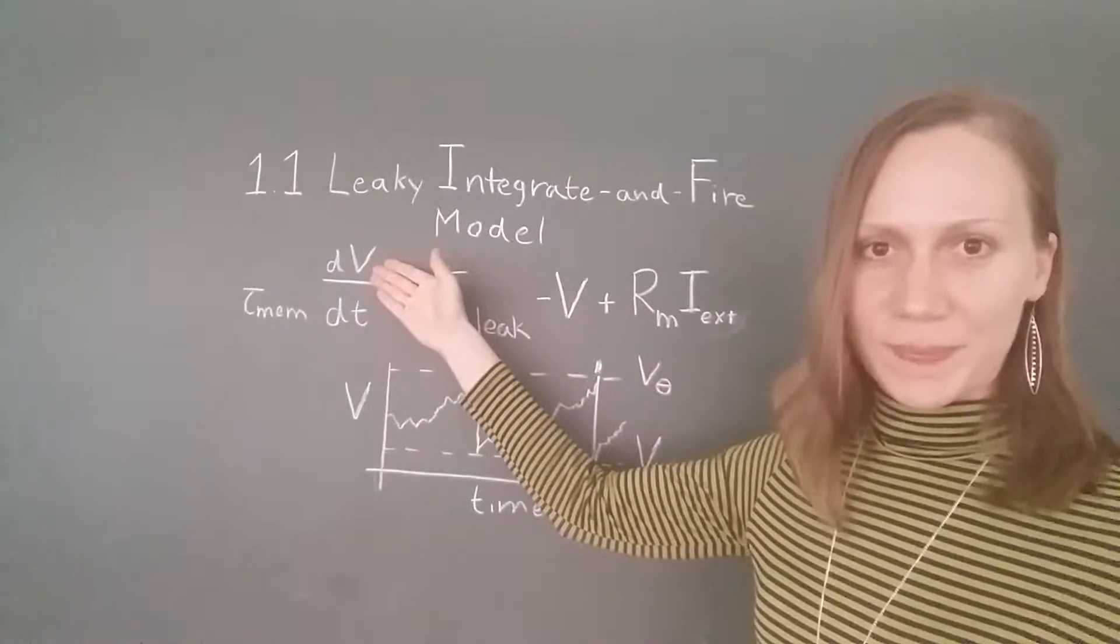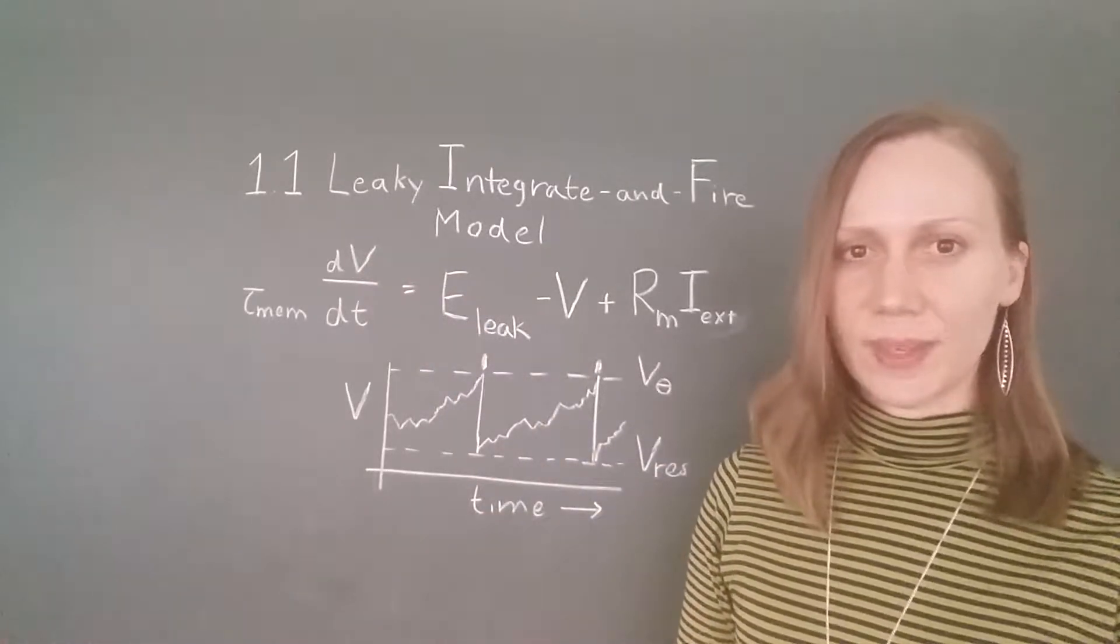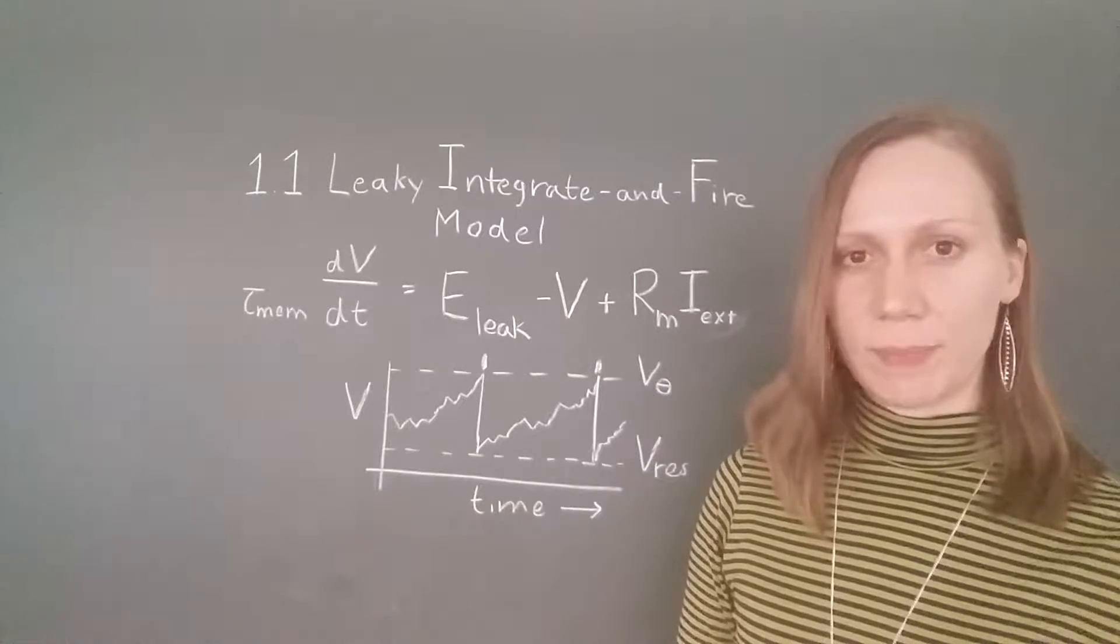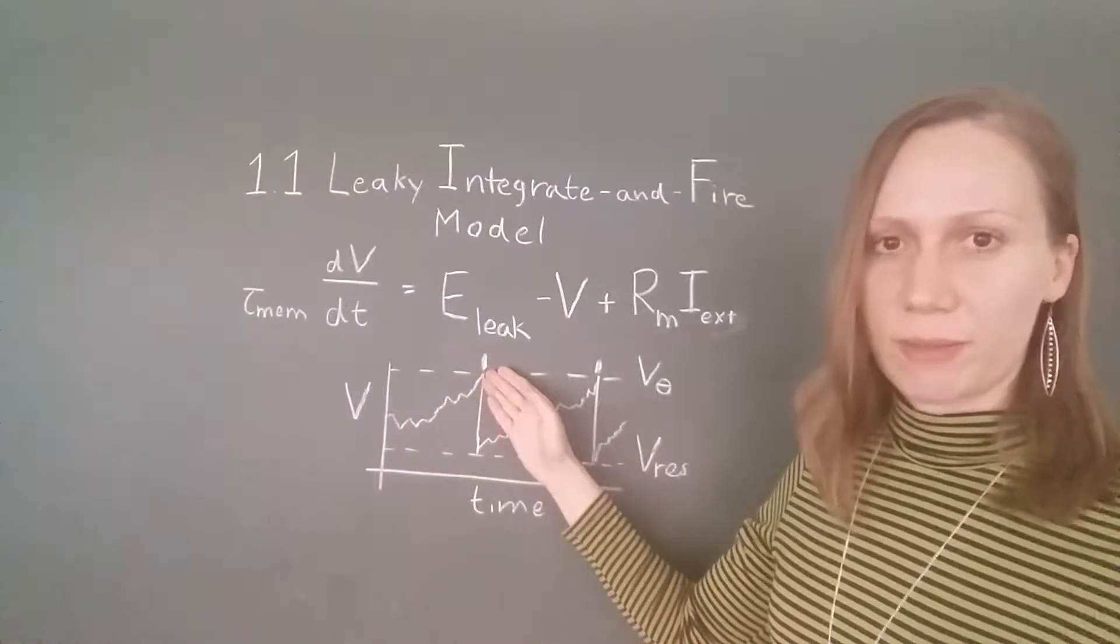It's called V. Action potentials are not simulated either, but a spike is assumed to happen simply when the membrane potential reaches the spiking threshold.